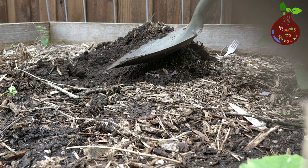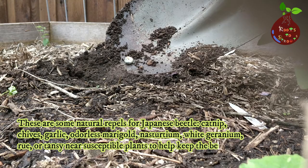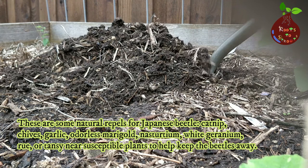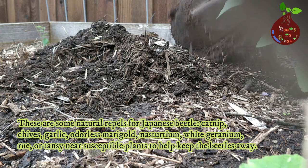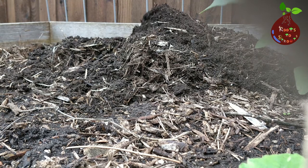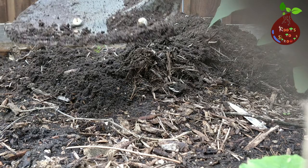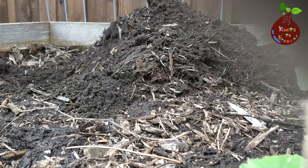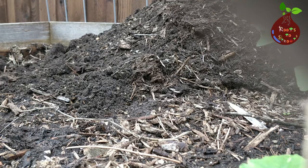There are natural ways to get rid of Japanese beetles by incorporating plants such as chives, garlic, marigold, and white geranium. White geranium is particularly interesting — beetles are attracted to its smell, but after eating the flower they become completely paralyzed for a few hours or even a day. That's a perfect time to collect them and put them in soapy water to kill them.